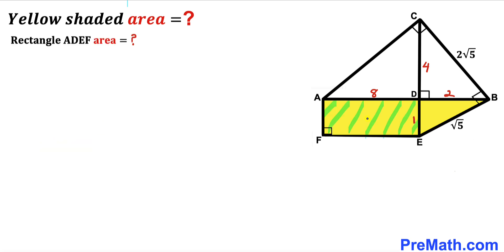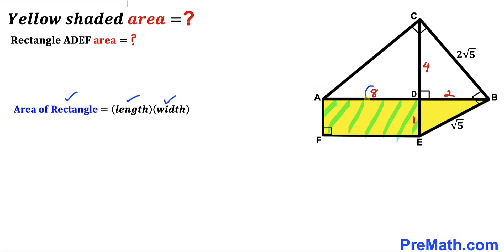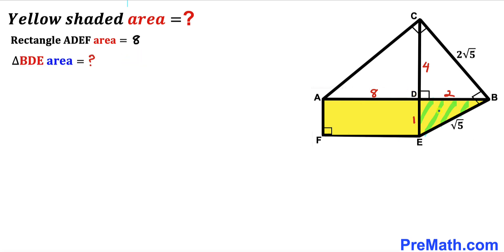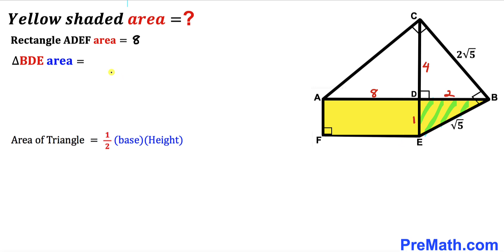Now let's calculate the area of rectangle ADEF. Using area equals length times width, our length is 8 and width is 1, so the rectangle area equals 8 square units. Next, for right triangle BDE, using area equals one half times base times height with base 2 and height 1: area equals one half times 2 times 1, which gives us 1 square unit.